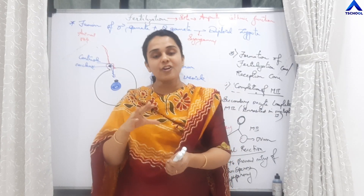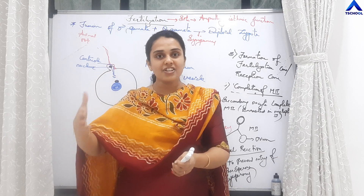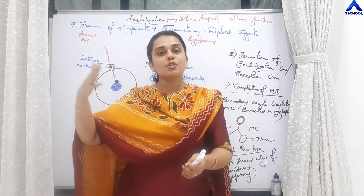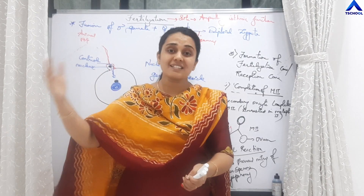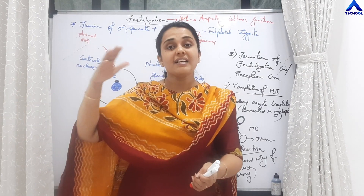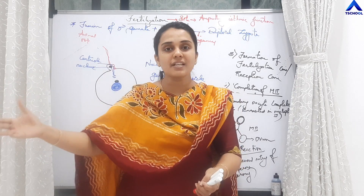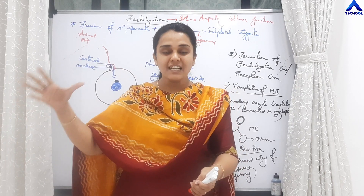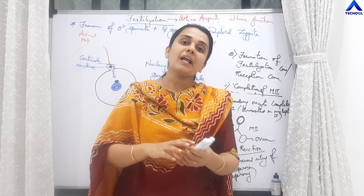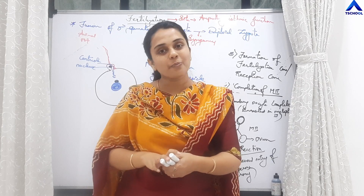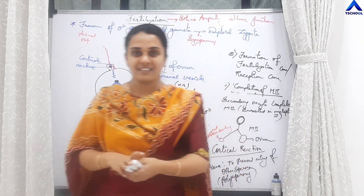The diploid zygote undergoes cleavage, forming 2, 4, 8, 16, and 32-cell structures, and finally there is the process of implantation, which will be studied in the next lecture.